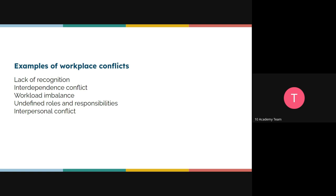Another one is interdependence conflict. This is when a particular person's role is affected by another person's. For example, in a team you have people who collect data, people who analyze it, and people who develop the model. If you are in the middle, your work is dependent on what the person before you does — so if the data collection task isn't done on time, it affects your work as well. Conflict can arise from such situations.